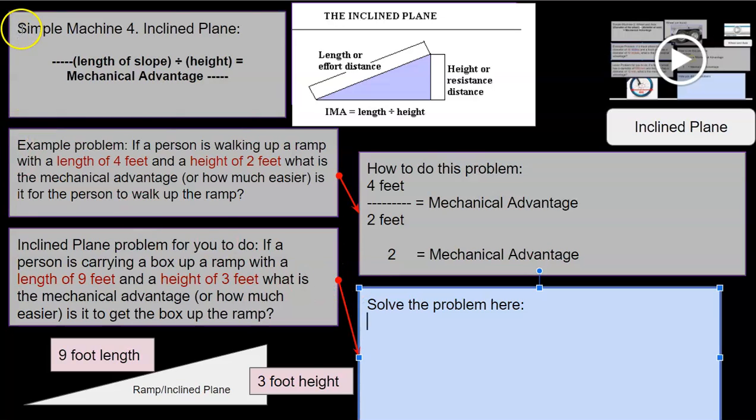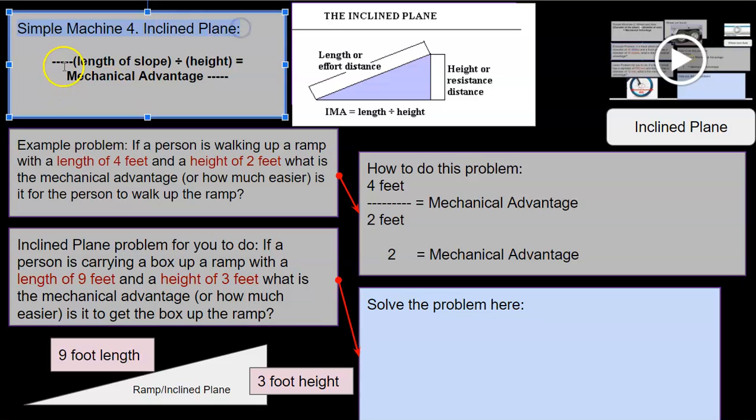Okay. Simple machine number four, four of six is inclined plane. And that's very easy as well. The equation for it is length of slope divided by height equals the mechanical advantage. We can see that over here. We've got the length or effort distance. This long line is whatever it is, and then the height is over here. So you just do length divided by height equals your mechanical advantage.